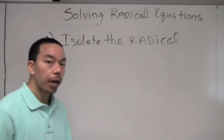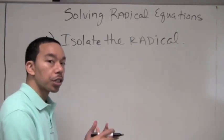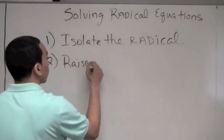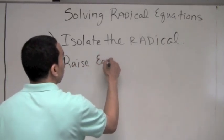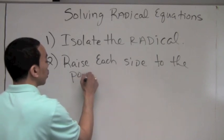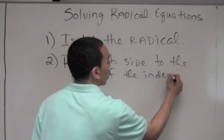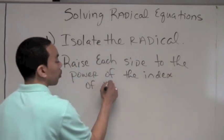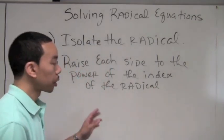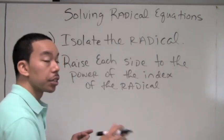Step two is, once you've isolated the radical, you raise each side to the power of the index of that radical. You look at the radical and you look at the index — the index tells you what power to raise each side to.